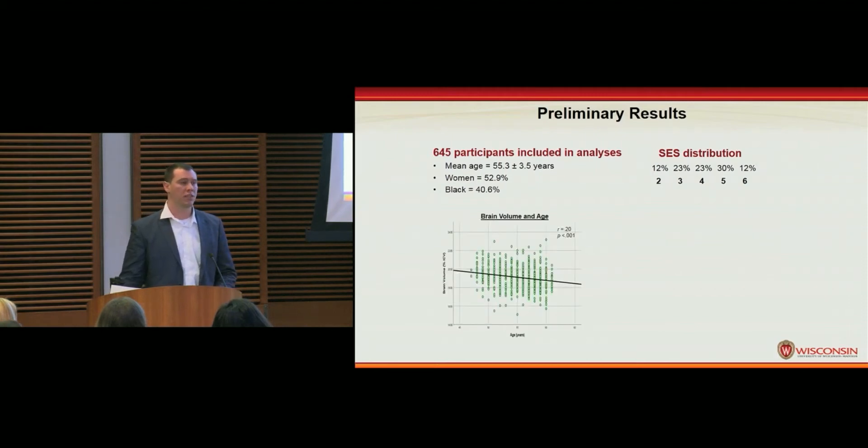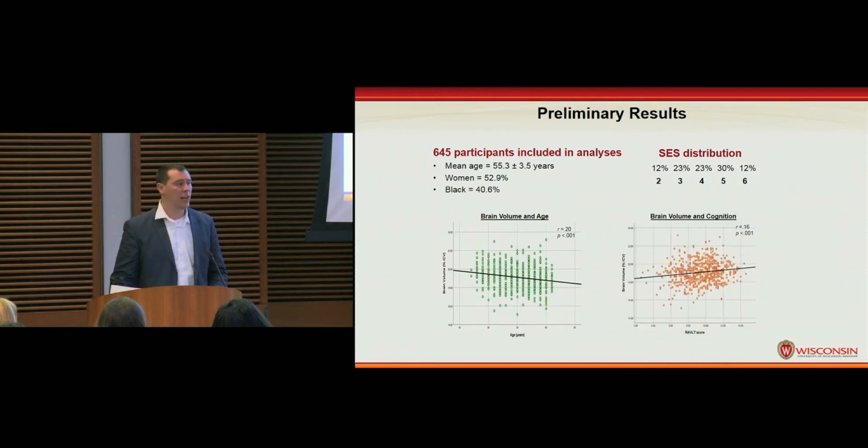Brain volume was negatively associated with age and positively associated with cognition. I present these data to demonstrate the potential utility of the SPARE-BA index.